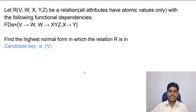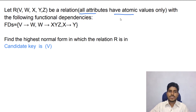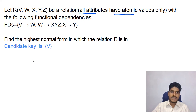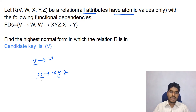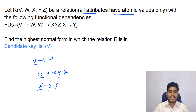Now we have to check whether this relation is in first normal form. All attributes have atomic values, so this relation is in first normal form. Now we have to check second normal form — we need to check for partial dependency. B determines W: B is the candidate key, not a proper subset of the candidate key. W determines X, Y, Z: W is also not a proper subset of the candidate key. So this relation does not contain any partial dependency. Therefore this relation is in second normal form.